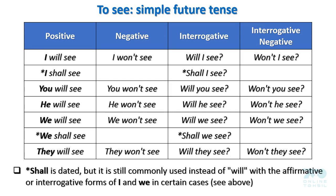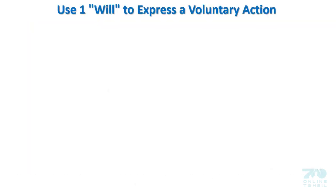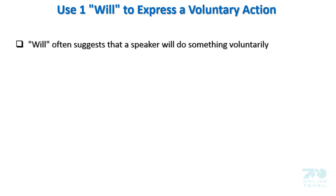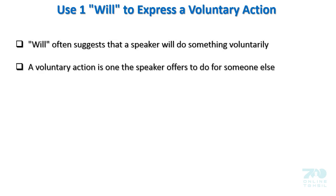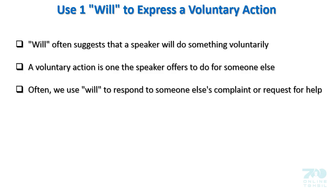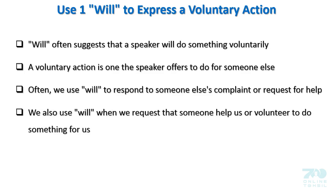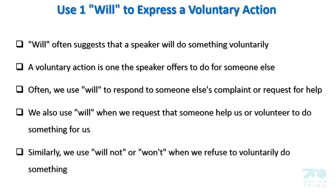Shall is dated, but it is still commonly used instead of will with a positive or interrogative form of I and we in certain cases. Use 1: will to express a voluntary action. Will often suggests that a speaker will do something voluntarily — an action offered for someone else. We often use will to respond to someone else's complaint or request for help. We also use will not or won't when we refuse to voluntarily do something.